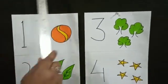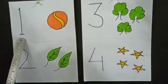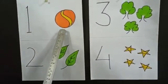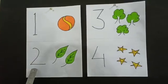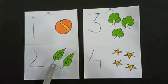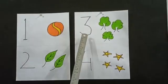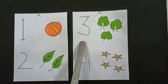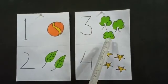Now look at this board. Here is number 1. Here is a ball. How many balls? One ball. Here is number 2. How many leaves? Two leaves. One and two. Here is number 3. How many trees? One, two, and three.